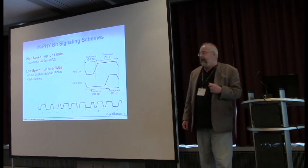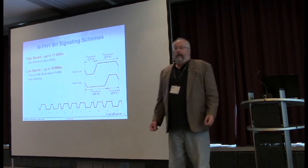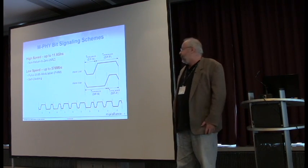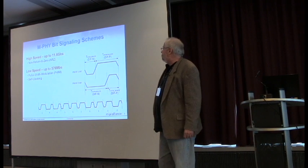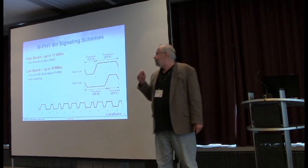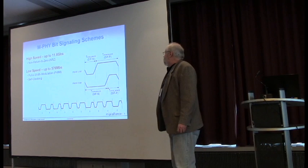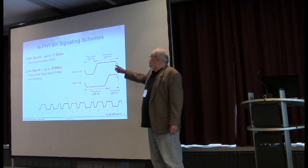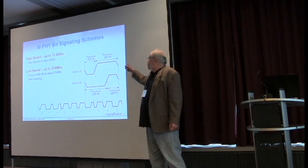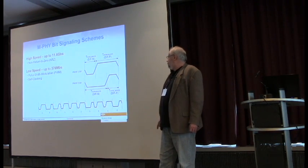The high-speed signaling is done with NRZ, or non-return to zero — your fairly standard high-speed serial interface. The low-speed was kind of interesting: we use pulse width modulation, which is self-clocking. In other words, we take the unit interval and divide it roughly into thirds, and the majority state of that interval becomes the bit description.